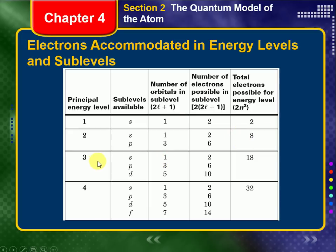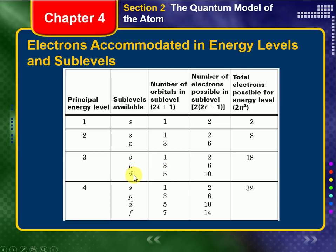When N is equal to 3, L can be anything from 0 to N minus 1 — in this case up to 2. If L is 0, here's our S orbital — one S orbital. When L is 1, we get our three different P orbitals. But when L is equal to 2, we get five D orbitals — the five different shapes shown throughout the video lecture. Now, with two electrons possible in the one S orbital, six total electrons in the three P orbitals, and ten electrons possible in the five D orbitals, that adds up to a total of 18 possible electrons in the third principal quantum number — the third energy level, N equals 3.